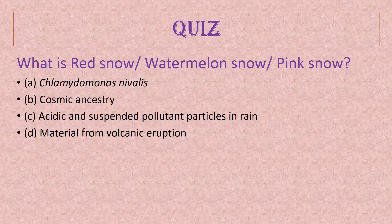There are four options. One is Chlamydomonas nivalis; another option is cosmic ancestry — the hypothesis that living organisms exist throughout the universe and this red snow could be due to that; another is acidic or other suspended deposition during rain; or materials deposited from volcanic eruptions. Write your answer in the comment section; I will discuss this at the end of the video.